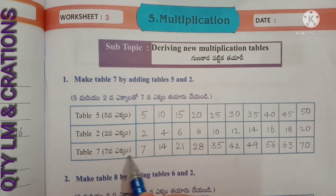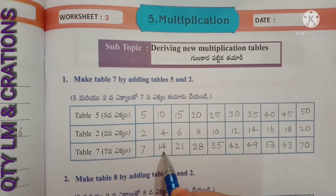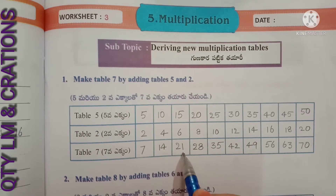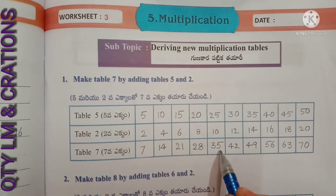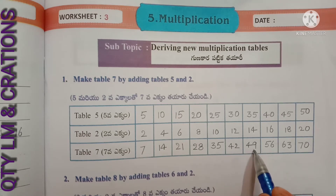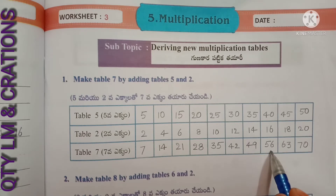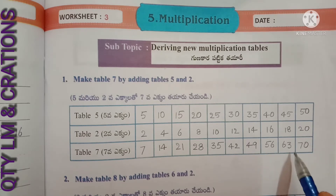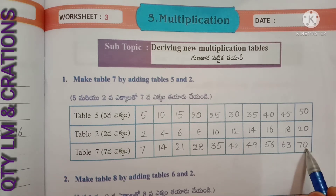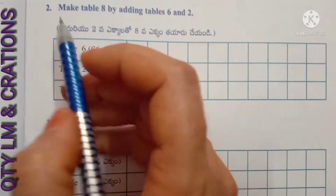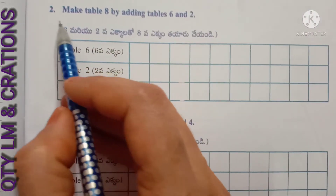Observe: seven ones are seven, seven twos are fourteen, seven threes are twenty-one, seven fours are twenty-eight, seven fives are thirty-five, seven sixes are forty-two, seven sevens are forty-nine, seven eights are fifty-six, seven nines are sixty-three, and seven tens are seventy.